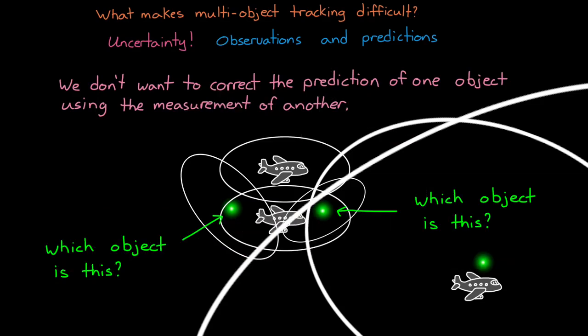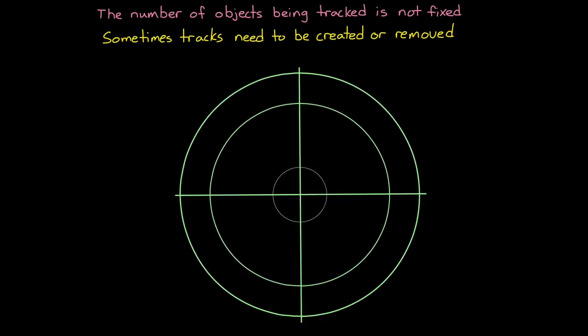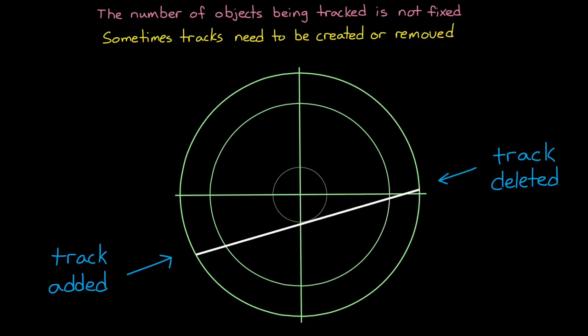Alright, so that's one problem. But another thing we need to consider is that the number of objects being tracked is not fixed. Sometimes tracks need to be created or removed based on what we observe. We may add a new track when an airplane flies into the radar range. And similarly, we may delete a track when one flies out. Now this creation and deletion doesn't just happen along the edge of the field of view of the sensors. We may have to create and delete tracks anywhere. For example, an airplane may land or take off within the radar range.